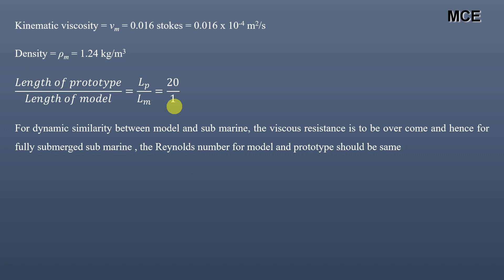For dynamic similarity between the model and the submarine, the viscous resistance must be overcome. For a fully submerged submarine, the Reynolds number for the model and prototype should be the same. Reynolds model law is used when viscous forces are predominant — typically in pipe flow and for resistance experienced by submarines, airplanes, or fully immersed bodies. The Reynolds number for the model and prototype should be equal.